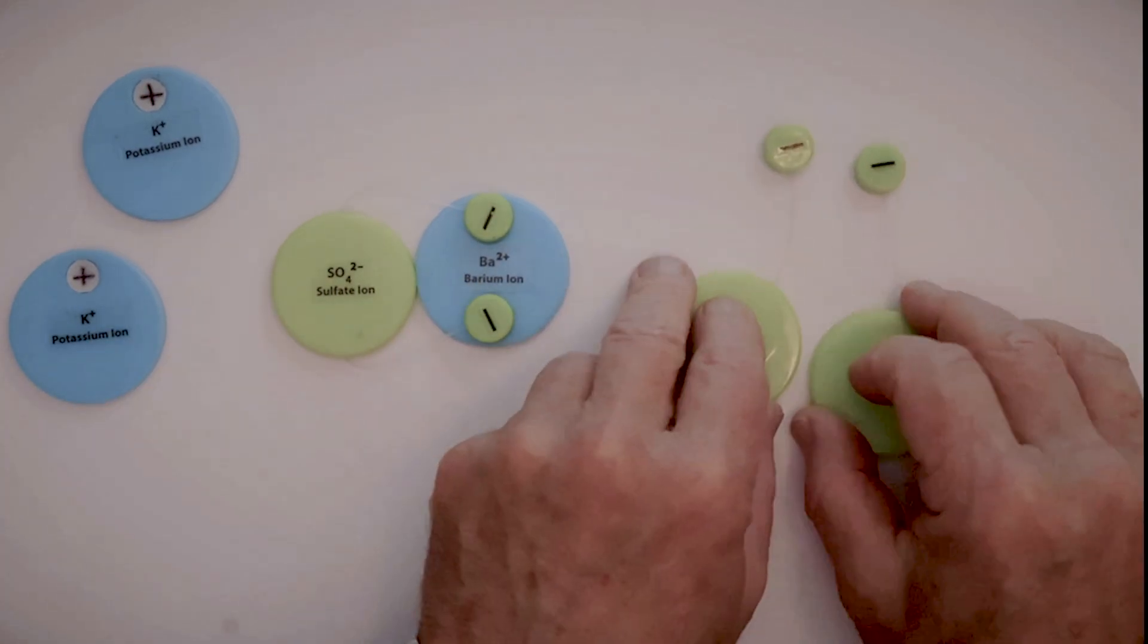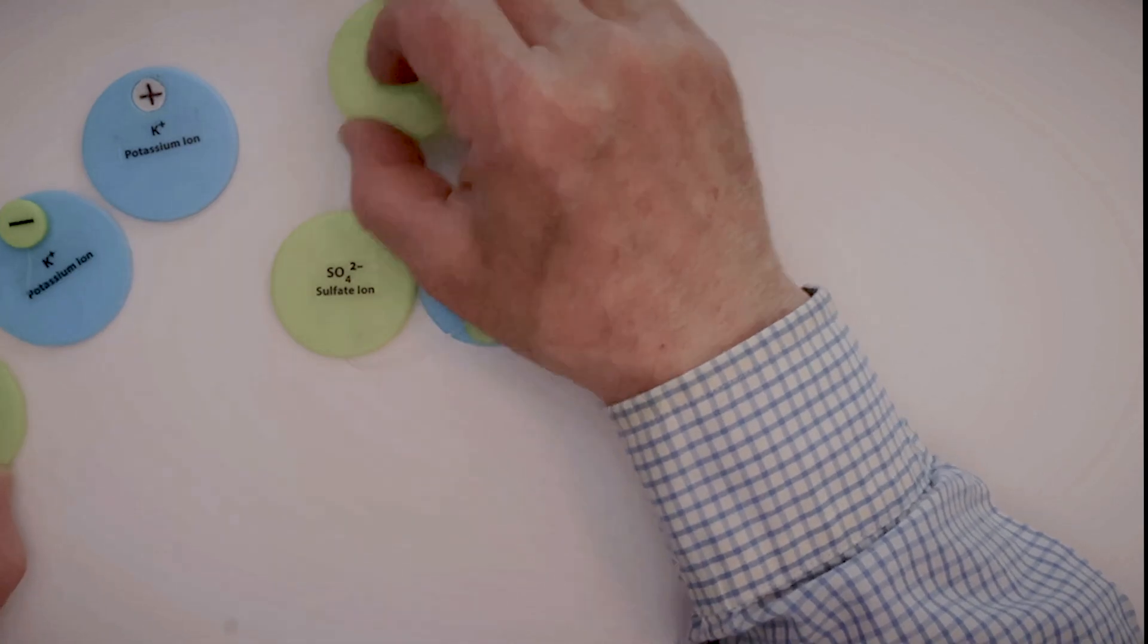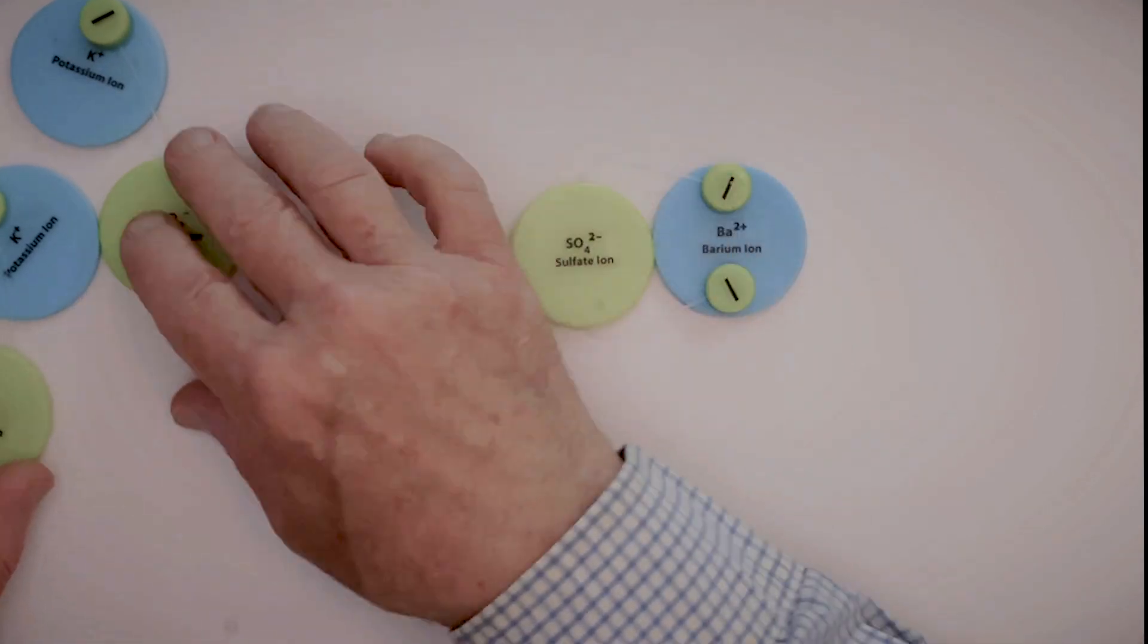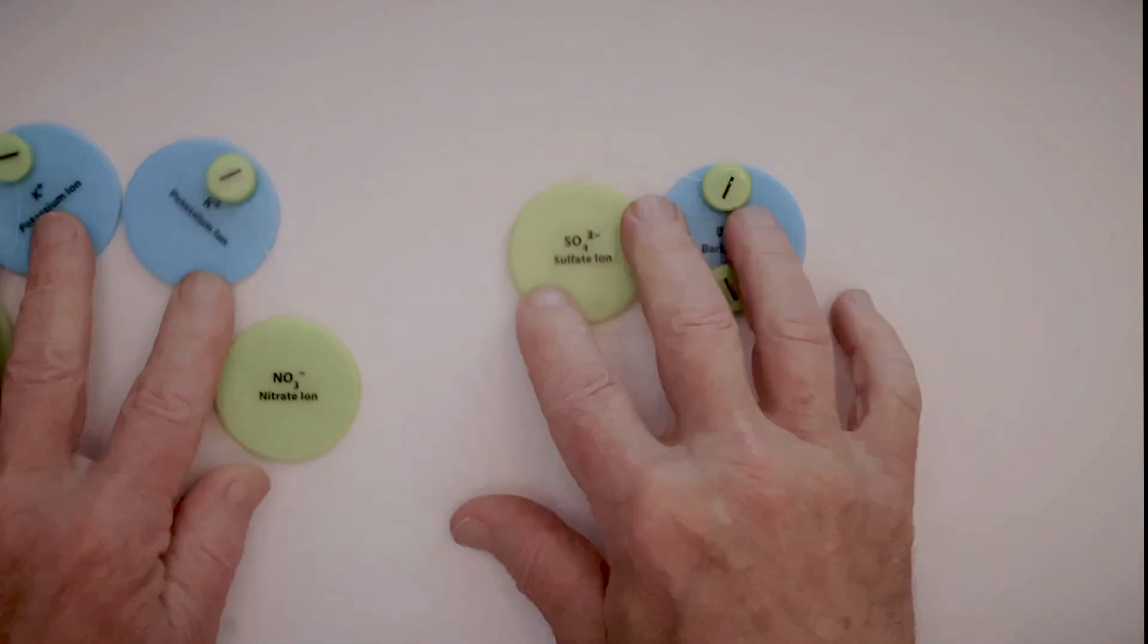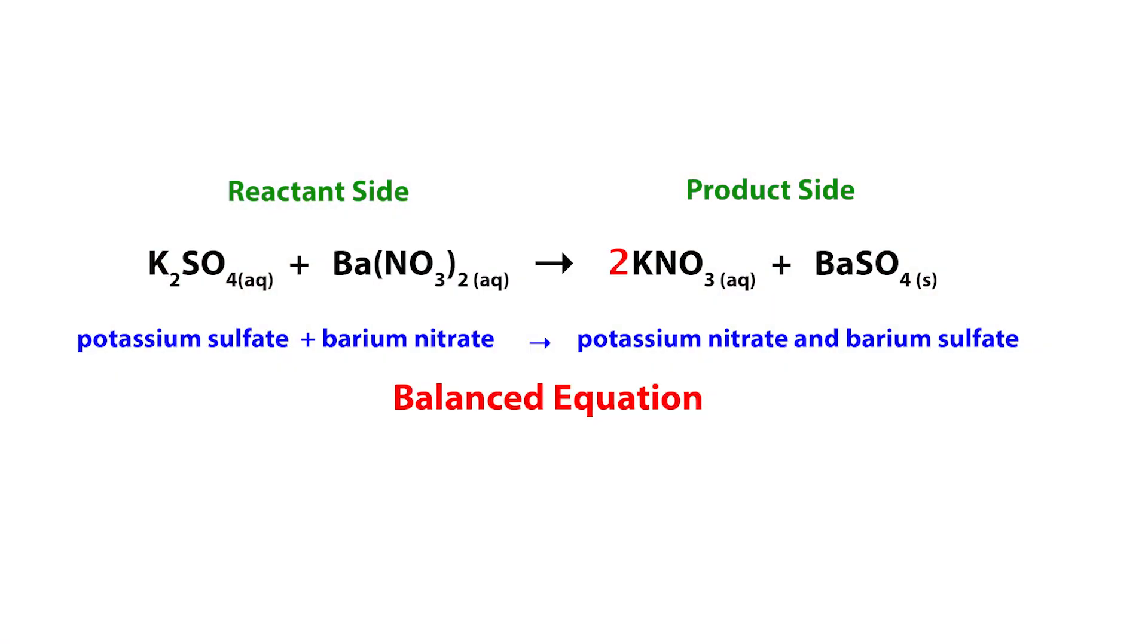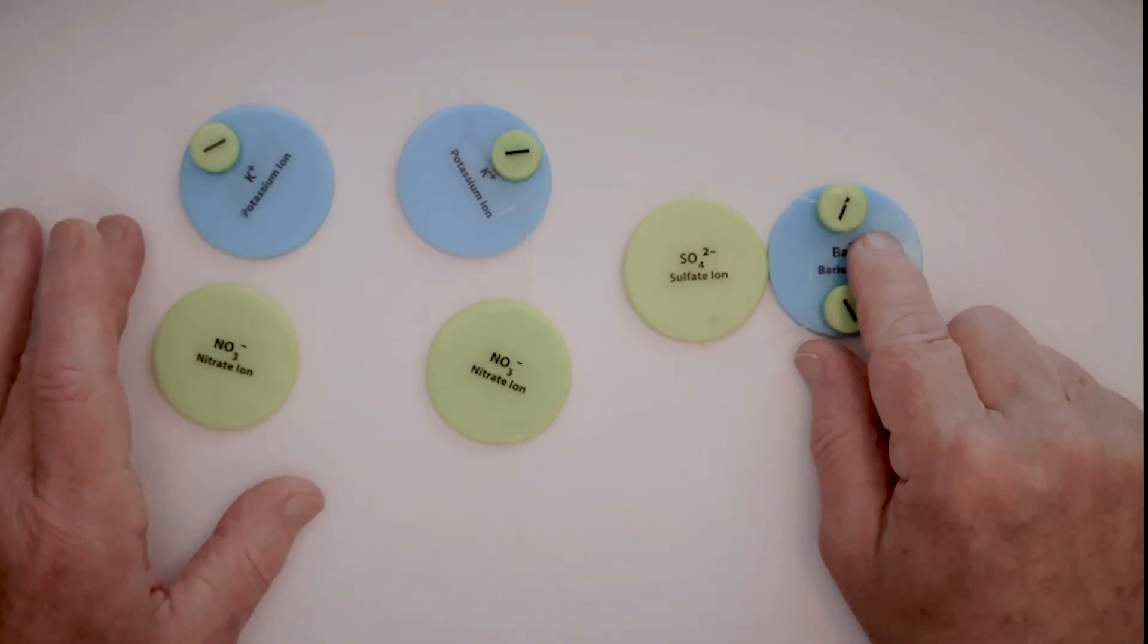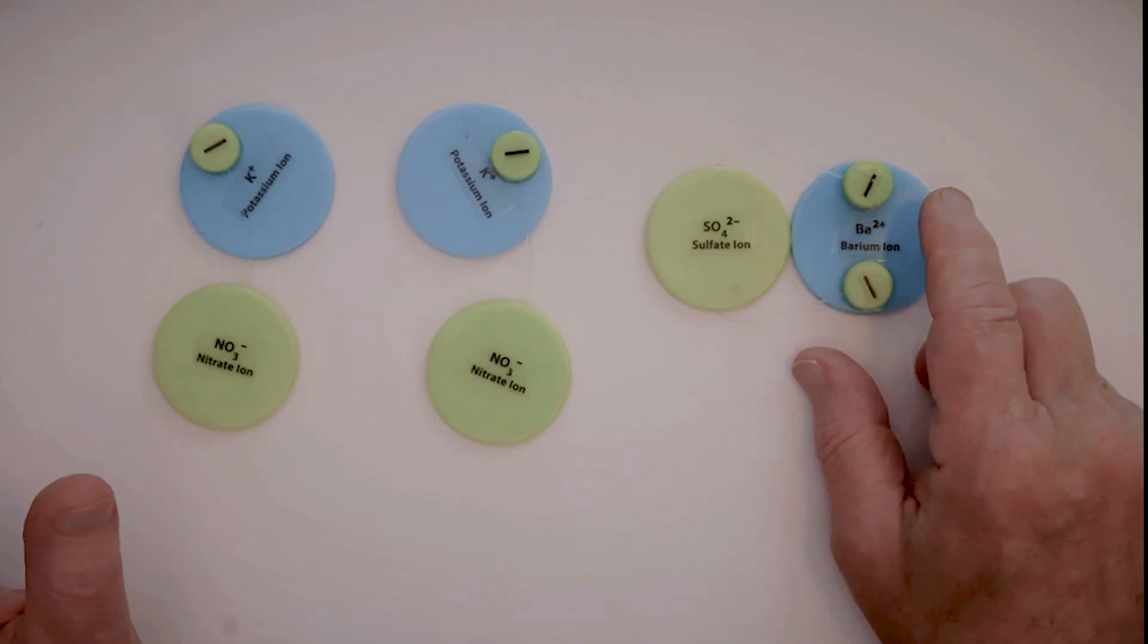So now, meanwhile, the potassium and the nitrates are coming together and coming off. But now we have the product side of the equation. Two potassium nitrates and one barium sulfate. That's the product side. So now we have a balanced equation.